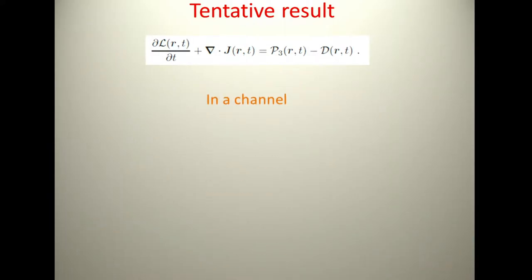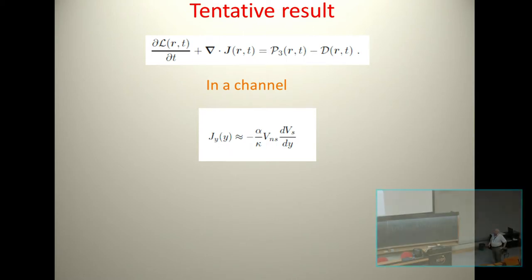The tentative result that we published two or three years ago is that in fact it's the third form that fits the data best. In a channel, you can write an equation like this. There's also a flux of the density of vortex lines that will look like this. This is a result of a closure calculation we did. Not P1 of Vinen, not P2, but P3 is the right thing.